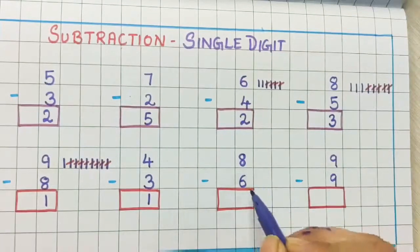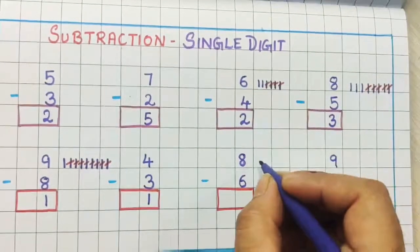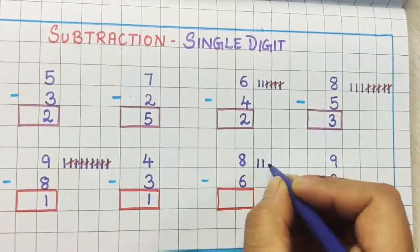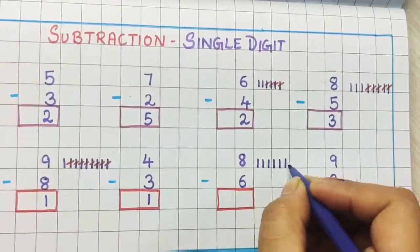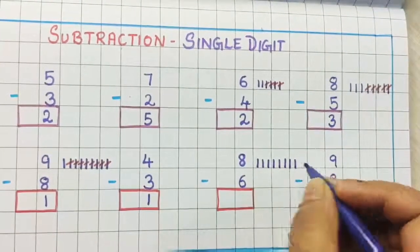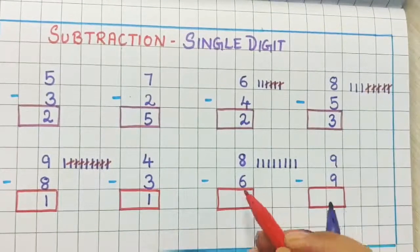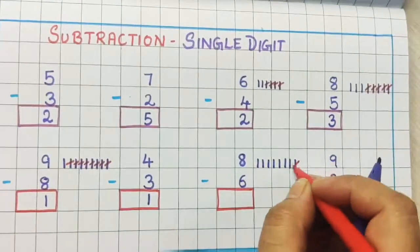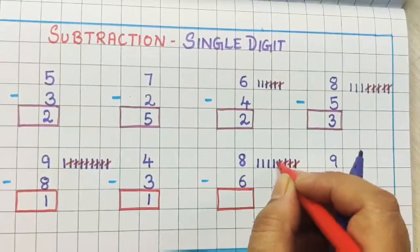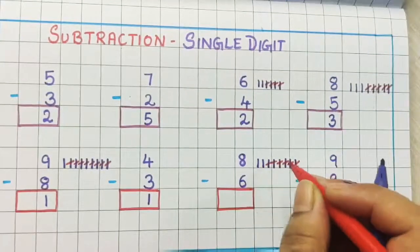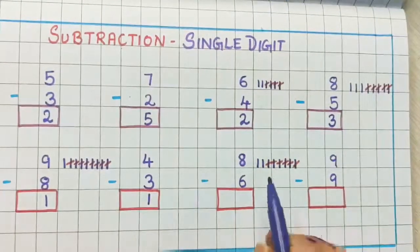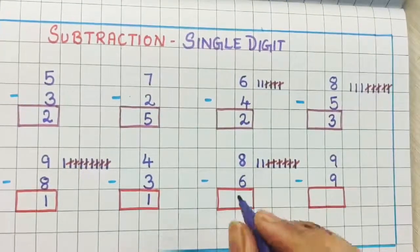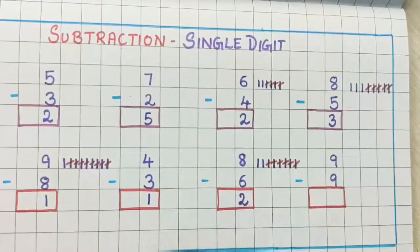Now 8 minus 6. I am drawing 8 lines: 1, 2, 3, 4, 5, 6, 7, 8. Now I am going to cut out 6 lines: 1, 2, 3, 4, 5, 6. So how many are left? 1 and 2. So the answer is 2.